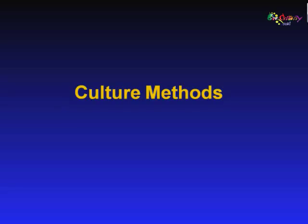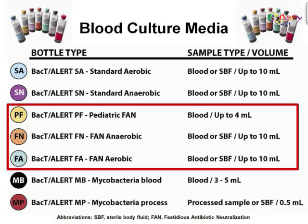That pretty much covers all I wanted to mention in the introduction section. Now, let's move on to discussing some common culture methods performed for pathogen identification. The first culture method we will discuss is blood culture. Blood culture is the principal diagnostic method for detecting and diagnosing bacteremia and fungemia, exhibiting a sensitivity ranging from 3.18 to 3,000 colony-forming units per milliliter, or CFUs per mL. Before I describe the process of blood culture in detail, I want to talk about some of the media used.